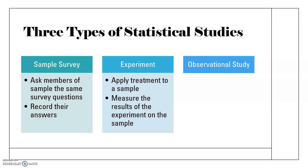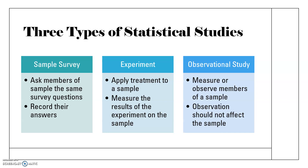Usually you have a control group as well so that you can see what happens to people who don't get the treatment and compare those results. An observational study is one where you're measuring or observing members of a sample but you're not affecting the members as you watch them. That's the difference between an observation and an experiment — in an experiment, something is happening to the people in your study. With an observational study, they shouldn't even notice that they're being studied.